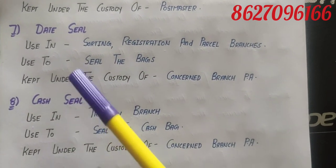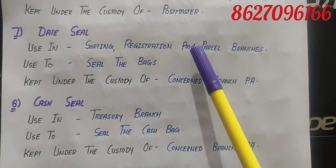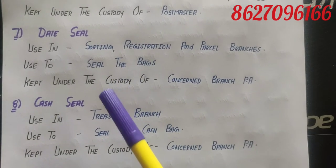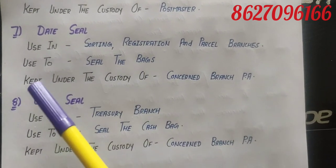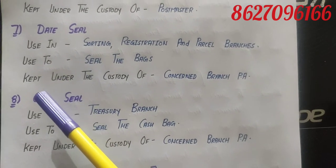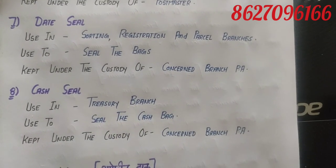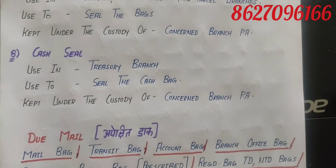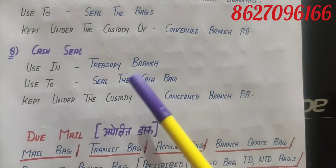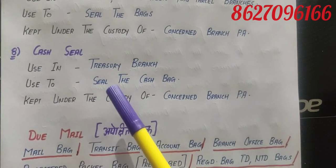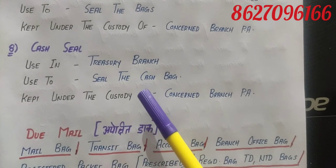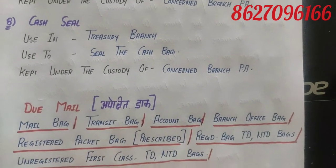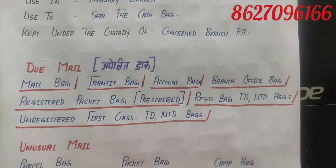Then we have the date seal, used in sorting, registration and parcel branches. It is used to seal bags — when bags are sealed, the date seal is stamped on the back. It is kept under the custody of the concerned branch Postal Assistant. Then we have the cash seal, used in the treasury branch. It is used to seal the cash bag, and it is kept under the custody of the concerned Postal Assistant.